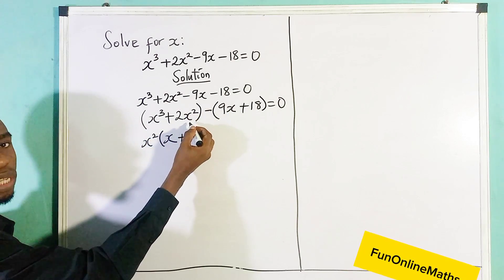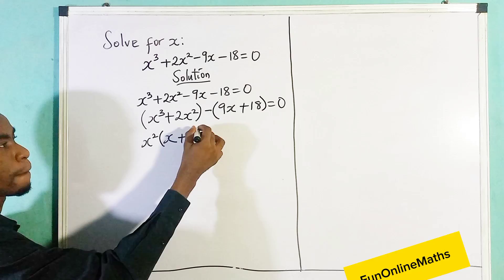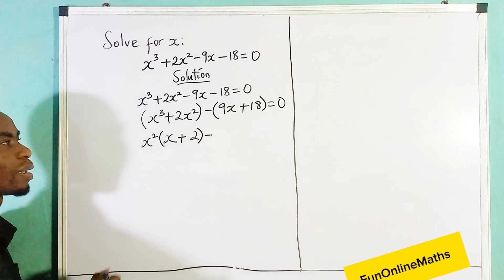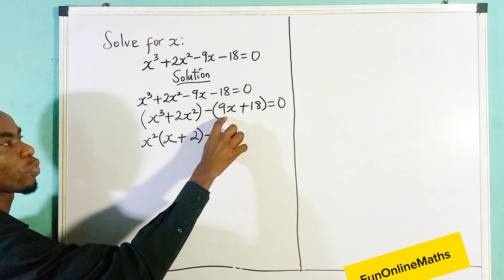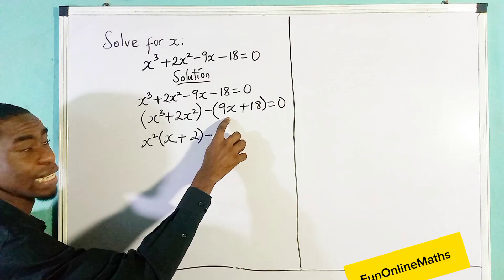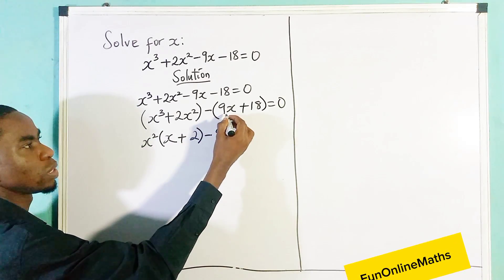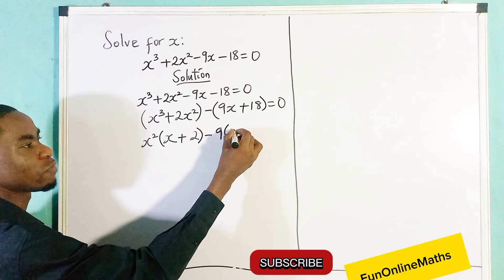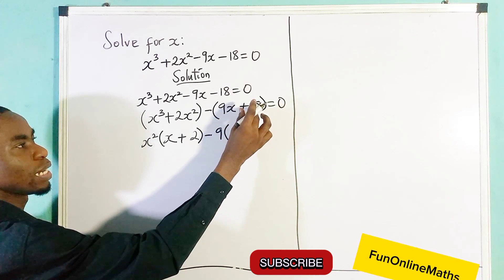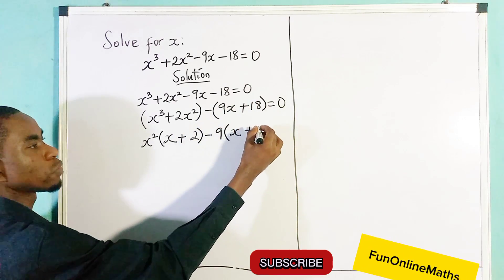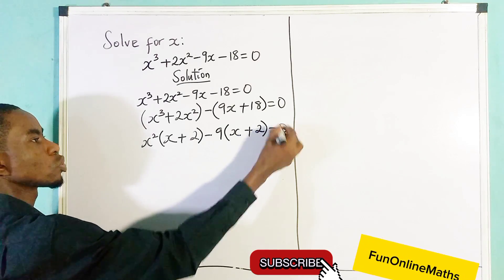Minus, what number can divide both of these? I think 9 can divide them. So we have minus 9 into, divide 9x by 9, you are left with x plus, divide 18 by 9, we're left with 2, and equal to 0.